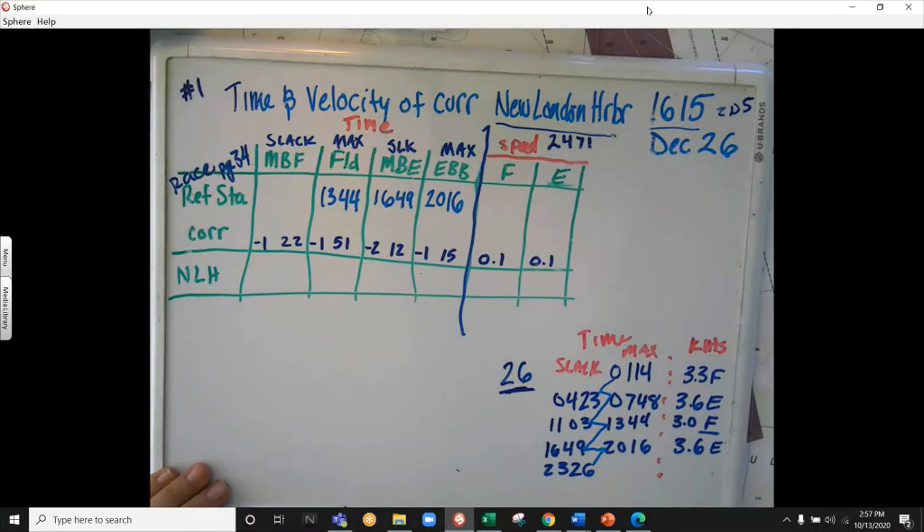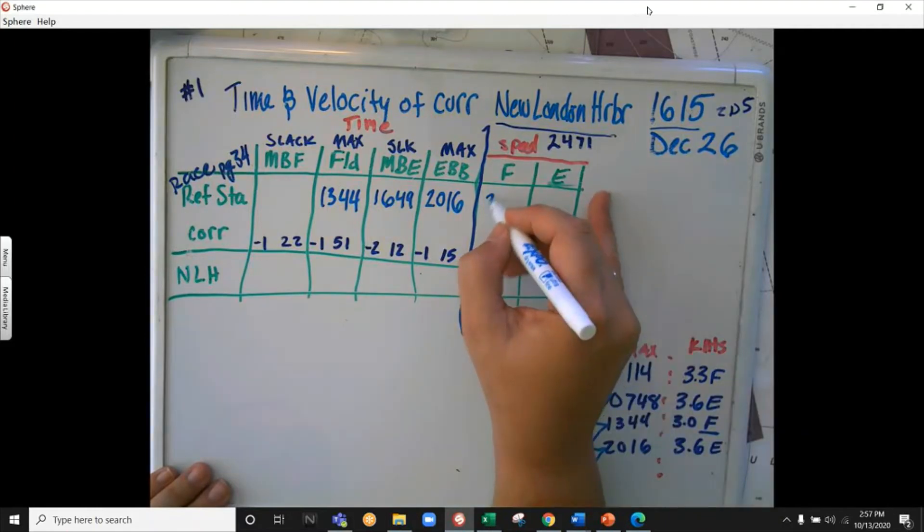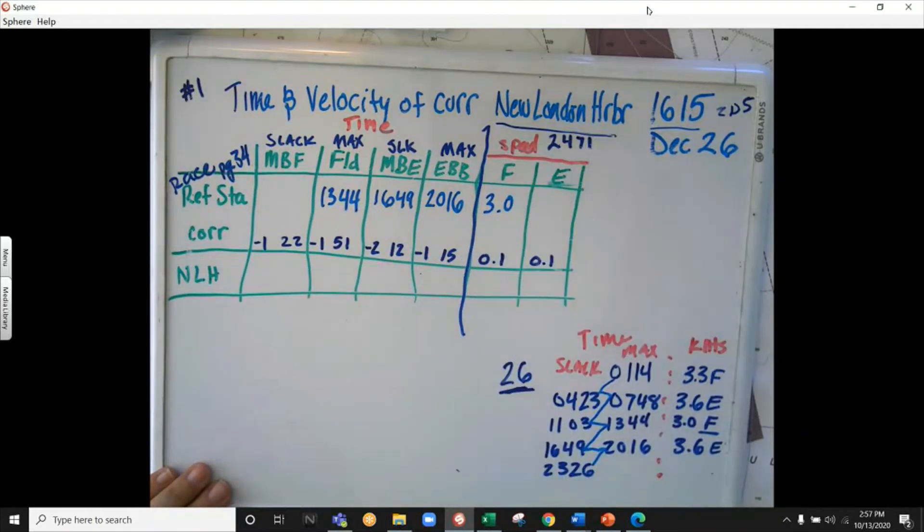Then I want to put in my speed or my velocity. For my flood, it's going to be 3.0, and I'm going to leave it at that. My flood is 3.0. This is the max velocity that I'm going for. So now I'm going to apply my corrections.